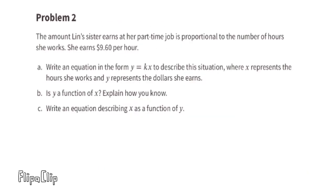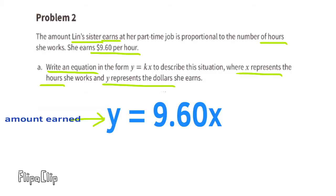Problem number 2. The amount Lynn's sister earns at her part-time job is proportional to the number of hours she works. She earns $9.60 per hour. A. Write an equation in the form of Y equals KX to describe this situation, where X represents the hours she works and Y represents the dollars she earns. The equation would be Y equals 9.60X. The Y represents the total amount earned, and the X represents the number of hours worked. Of course, the 9.60 represents the $9.60 per hour that she earns.